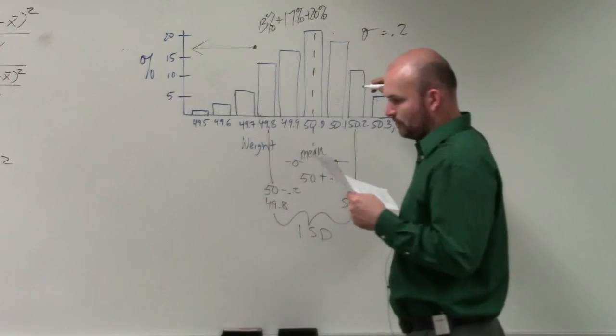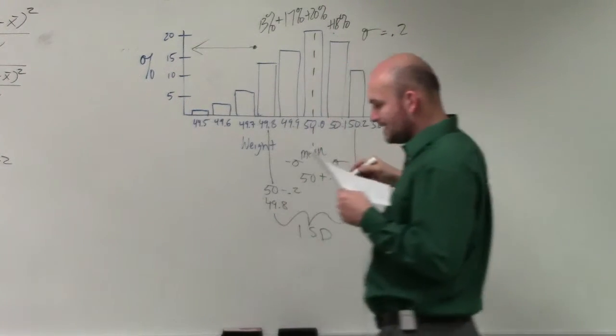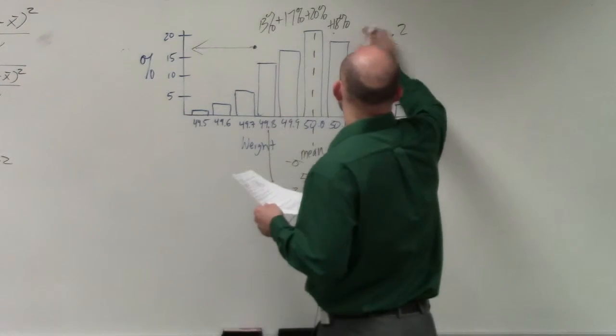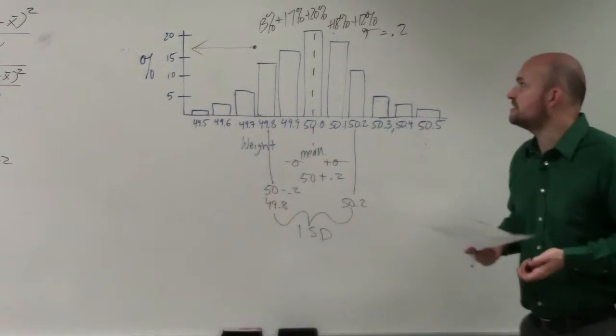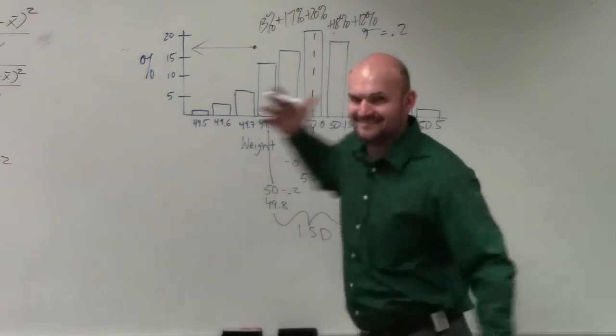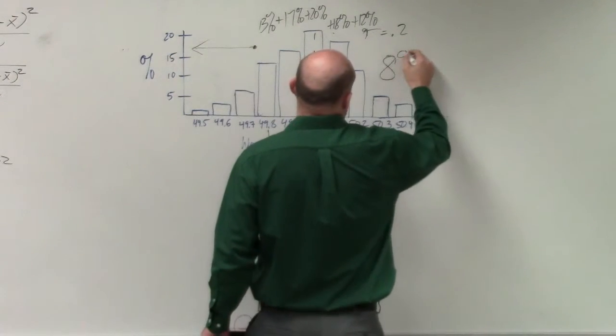At 50.1, I'm at 18%. And at 50.2, it looks like I'm at 12%. So when I add 13 plus 17 plus 20 plus 18 plus 12, I get 80.